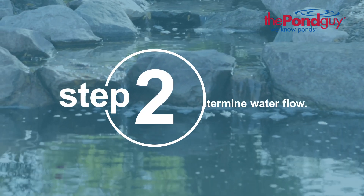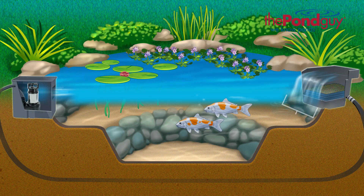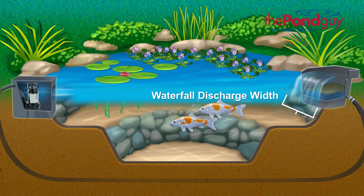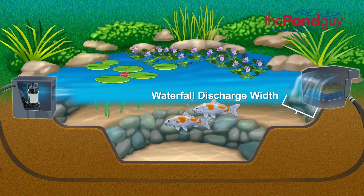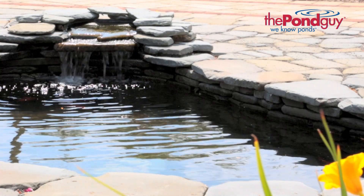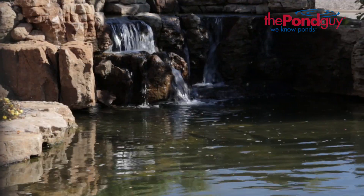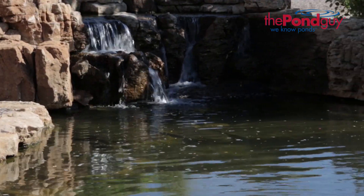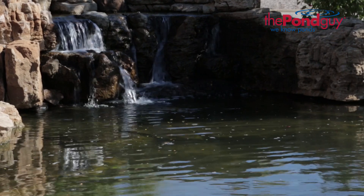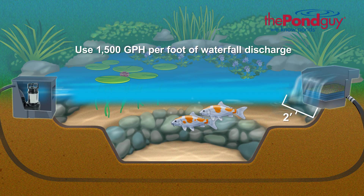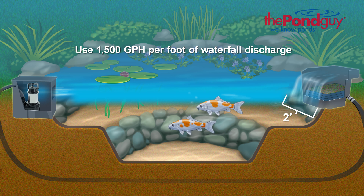Step 2: determine desired water flow. First, measure the width in feet of the waterfall discharge — the waterfall discharge is where the water enters the pond. For this example, let's say the width of the waterfall discharge is two feet. Next, determine the amount of flow you're looking for. Are you looking for a gentle sound of trickling water, a more rigorous flow like Niagara Falls, or something in between? For an average flow, use 1,500 gallons per hour for every foot of waterfall width at discharge.